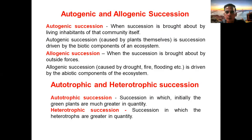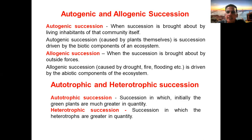Ecological succession can be divided into different kinds: autogenic and allogenic succession. Autogenic succession is brought about by the living inhabitants of that community itself — a kind of example where the biotic components of the ecosystem play a major role. For example, in secondary succession the succession was brought about by the seeds and plants themselves; the soil already contained seeds of different kinds of weeds. In this way it is called autogenic succession, brought about by the old members of the community which were already flourishing in that area.